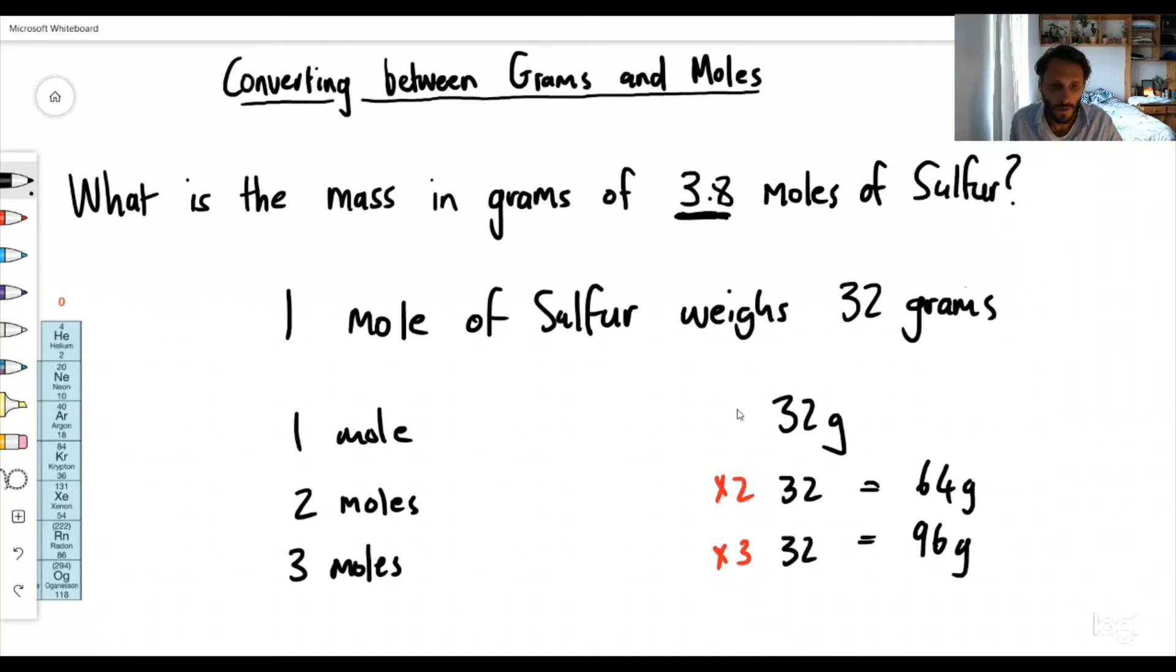Now how do we get 3.8? Well I think a lot of you can figure that out. 3.8 moles, you're going to take 32 and you're going to times it by 3.8. This is going to give me 121.6 grams. So 3.8 moles weighs 121.6 grams.